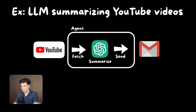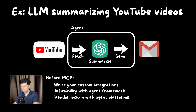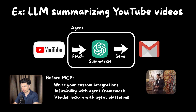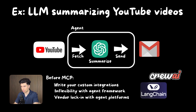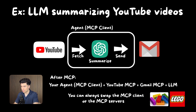Let's say you wanted to have an LLM summarize a podcast on YouTube and send an email for your newsletter business. Before MCP, you'd need custom integrations for fetching the transcripts and sending emails — each connection a complex, messy web of one-off solutions. You might try existing AI agent frameworks, but each creates its own problems: vendor lock-in with CrewAI, inflexibility with LangChain and Llama Index, or maintenance headaches with custom solutions.